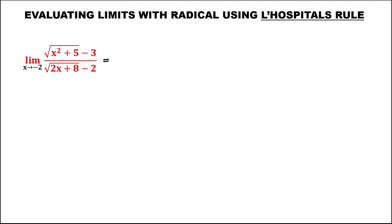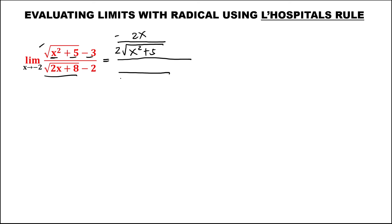For the next problem, to evaluate the limit using L'Hopital's rule: from the numerator, since it contains a radical, the denominator of the derivative gets 2 added, then copy the given: x²+5. For the numerator part, the derivative of x² is 2x, and the derivative of the constant is 0. For the denominator of the original expression, the derivative of the constant is also 0.